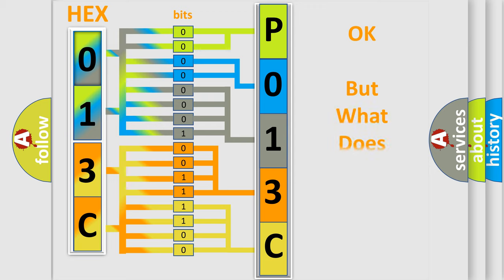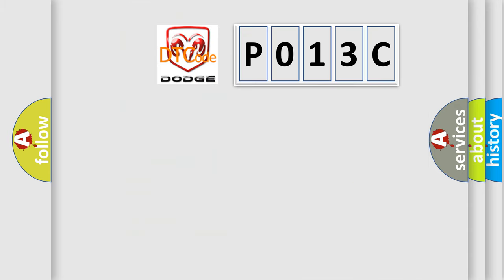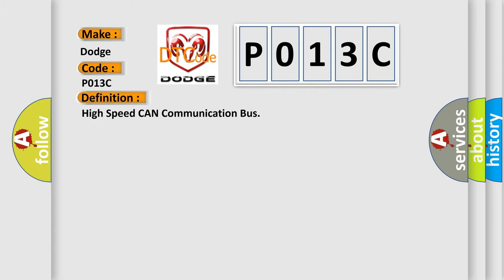We now know in what way the diagnostic tool translates the received information into a more comprehensible format. The number itself does not make sense to us if we cannot assign information about what it actually expresses. So, what does the diagnostic trouble code P013C interpret specifically for Dodge car manufacturers? The basic definition is: High speed CAN communication bus.